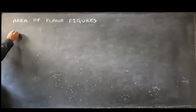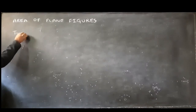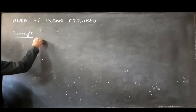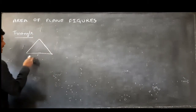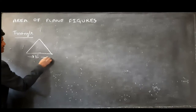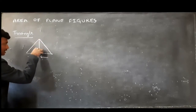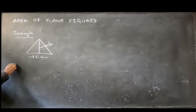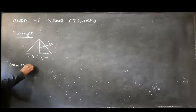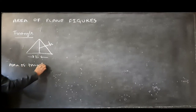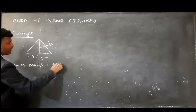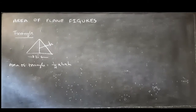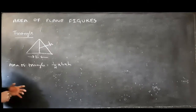First of all, triangle. In a triangle, this is the base of the triangle and this is the altitude — it is nothing but height. So, the area of a triangle is equal to half into base into height. Half into base into height.